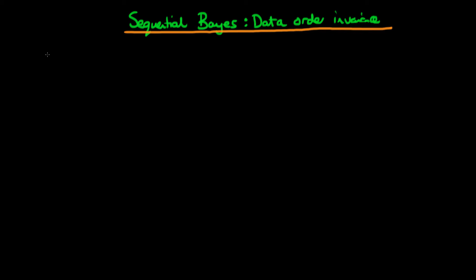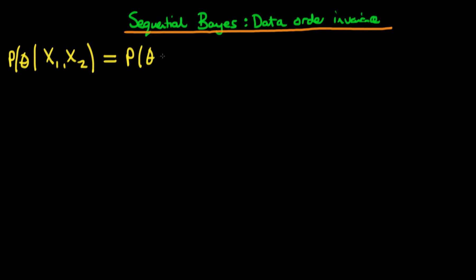In this video, I want to prove that if we have two data points, x1 and x2, and x1 and x2 are independent, then it turns out Bayes' rule says that the posterior density — the probability of theta given x1 and x2 — is independent of the order in which we receive x1 and x2. So this is actually the same as the probability of theta given x2 and then x1.